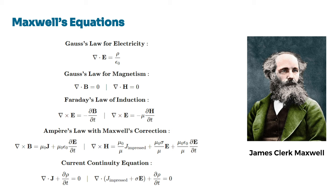The study of electromagnetism has a rich history, beginning with the pioneering work of scientists such as James Clerk Maxwell, whose famous equations unified the laws of electricity and magnetism. Published in the mid-19th century, Maxwell's equations laid the foundation for modern electromagnetics by mathematically describing the behavior of electric and magnetic fields and their interactions with matter. These equations, which consist of four fundamental relations, remain at the core of much of physics and engineering today.